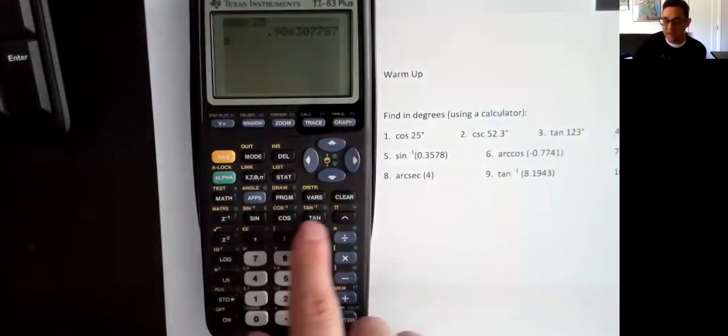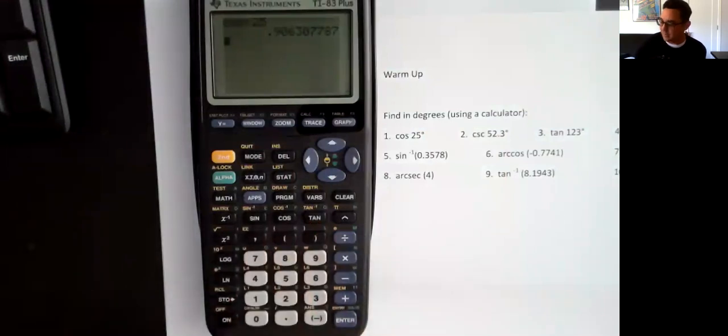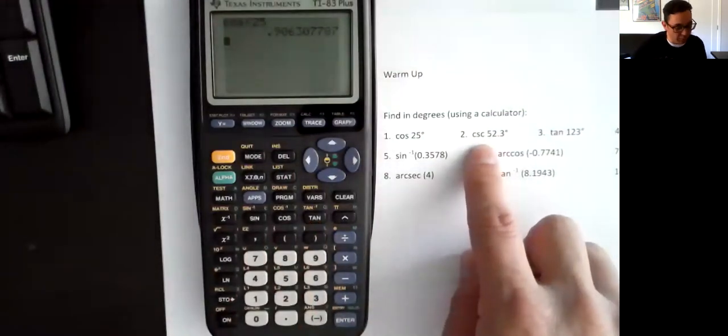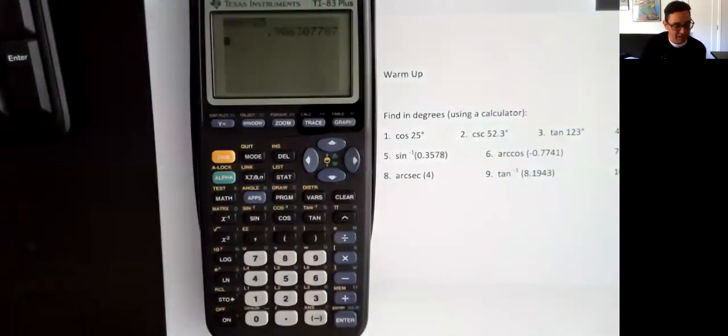That would be my answer for the cosine of 25 degrees. Same thing for sine and tangent. You just hit the button, you hit the degree, and you're done. Now, what about cosecant? Notice there's no cosecant button, so that's a little bit harder to do. So here's what you do.